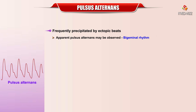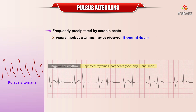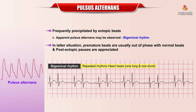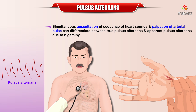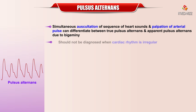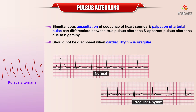Pulsus alternans is frequently precipitated by ectopic beats. Apparent pulsus alternans may be observed in patients with a bigeminal rhythm, where the premature beats are usually out of phase with the normal beats and post-ectopic pauses are appreciated. Simultaneous auscultation of heart sounds and palpation of the arterial pulse can differentiate between true pulsus alternans and apparent pulsus alternans due to bigeminy. Pulsus alternans should not be diagnosed when the cardiac rhythm is irregular.